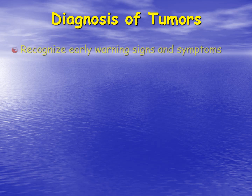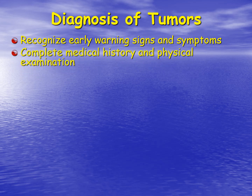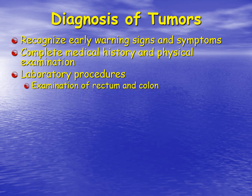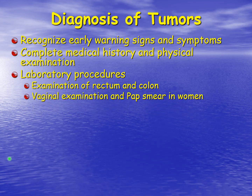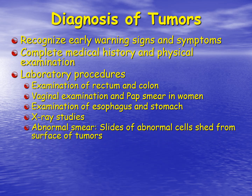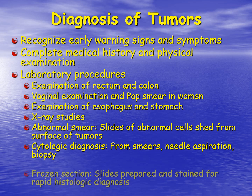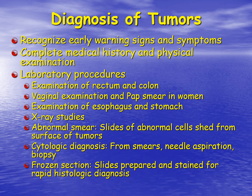How do we diagnose tumors? We want to recognize early warning signs and symptoms, as the earlier we can recognize cancer, the better our treatment options will be. This requires a complete medical history and physical examination, numerous laboratory procedures, examination of the rectum and colon via colonoscopy, vaginal examination and Pap smear in women for cervical cancer, examination of the esophagus and stomach, radiological studies, smears of abnormal cells shed from tumors, cytology from smears, fine needle aspiration or biopsies, and even frozen sections — slides prepared and stained for rapid histological diagnosis during surgery to verify clean margins.